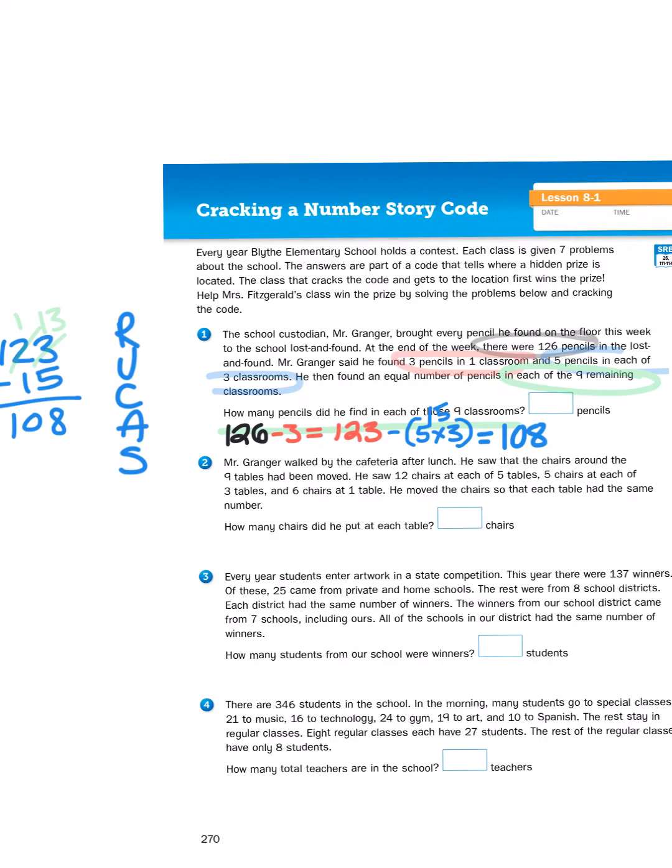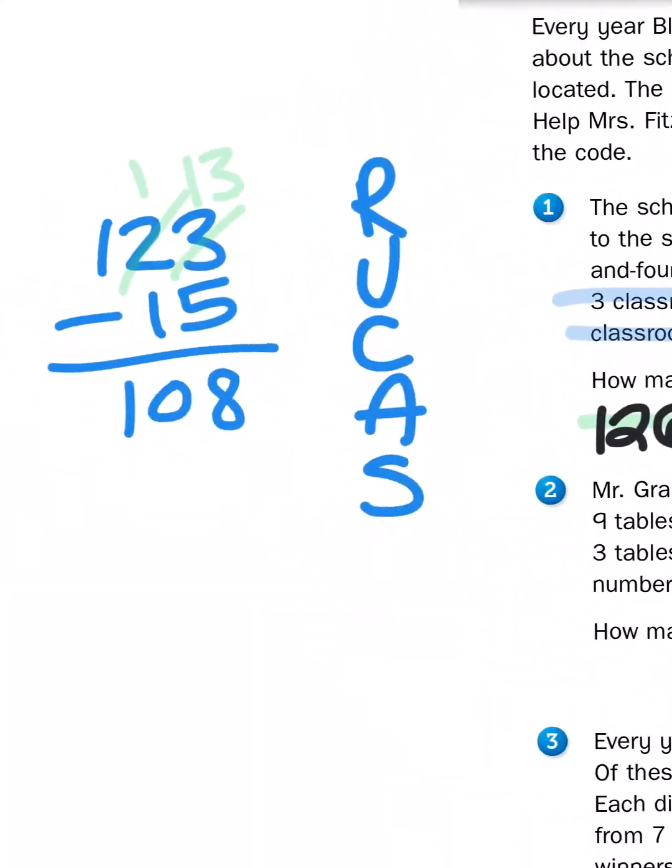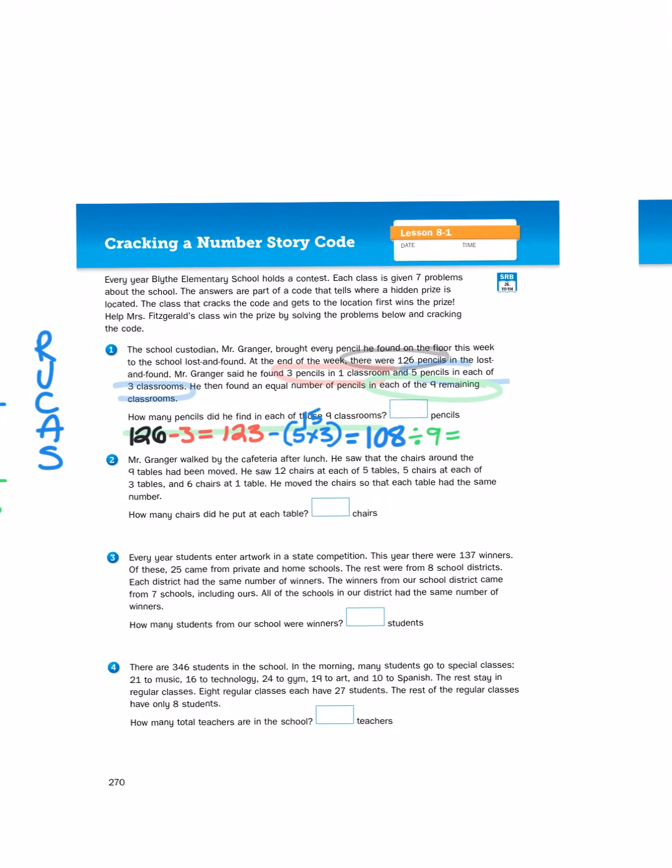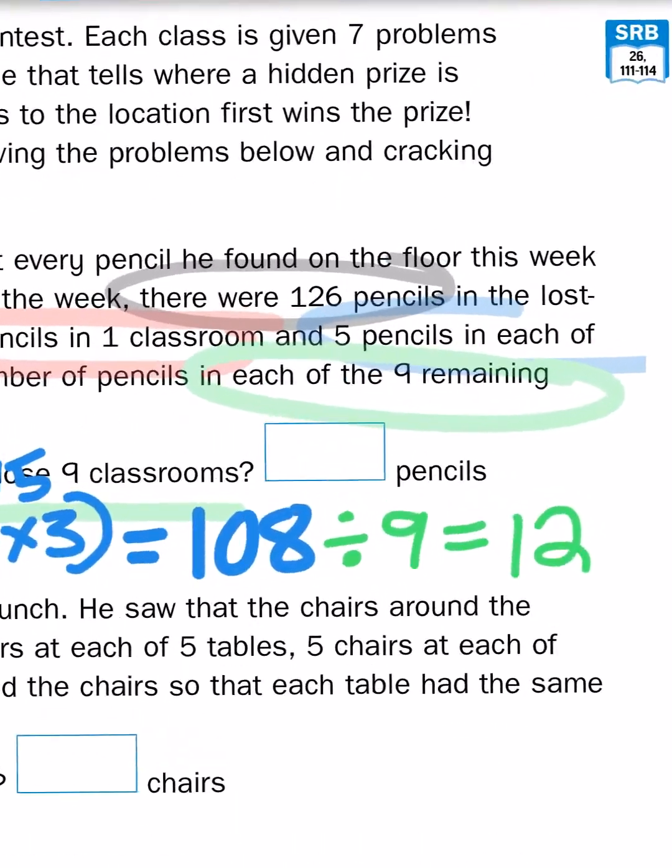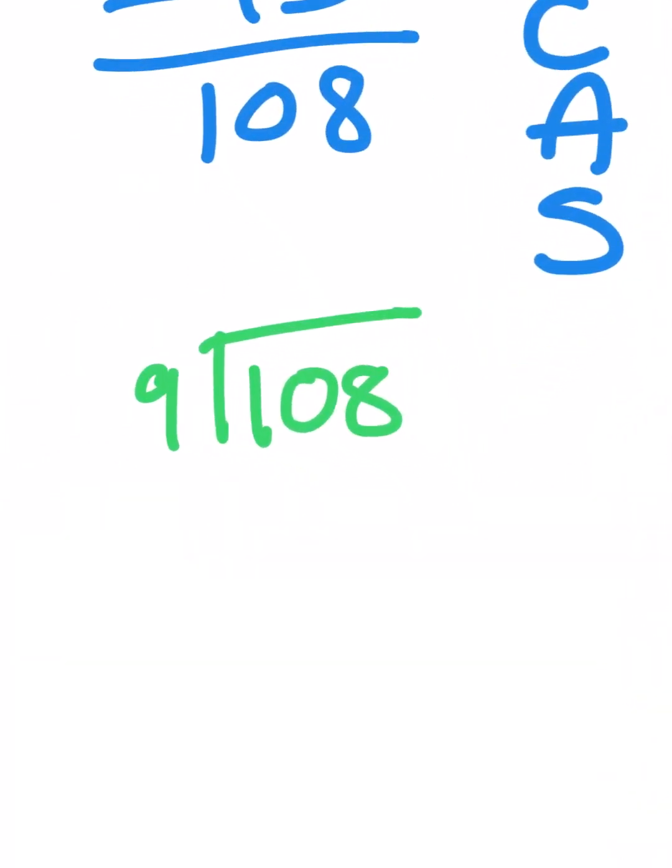Now I have to take 108 and divide that by 9. I already know that 108 is the product of 9 times 12, so my answer here is he found 12 pencils in each of the 9 remaining classrooms.